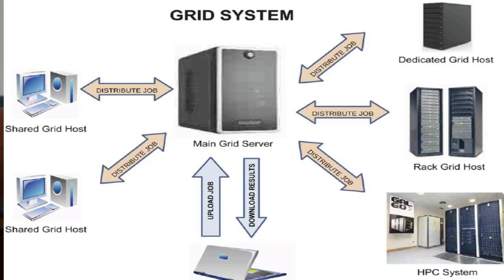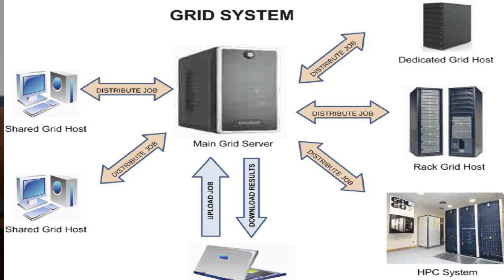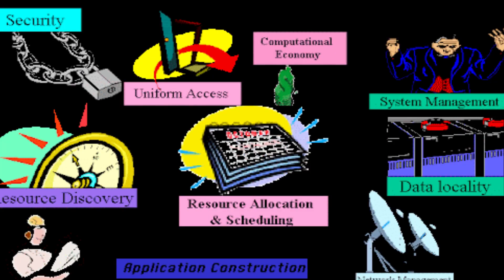2.5: a collection of independent networked computers that act together to perform very large tasks. That's what we call grid computing. All grid computing means is these computers are standalone computers connected to the internet, and we connect them to one another because we want their combined computing power to accomplish something. For example, when processing information regarding the weather, they generally need a lot of computing power.